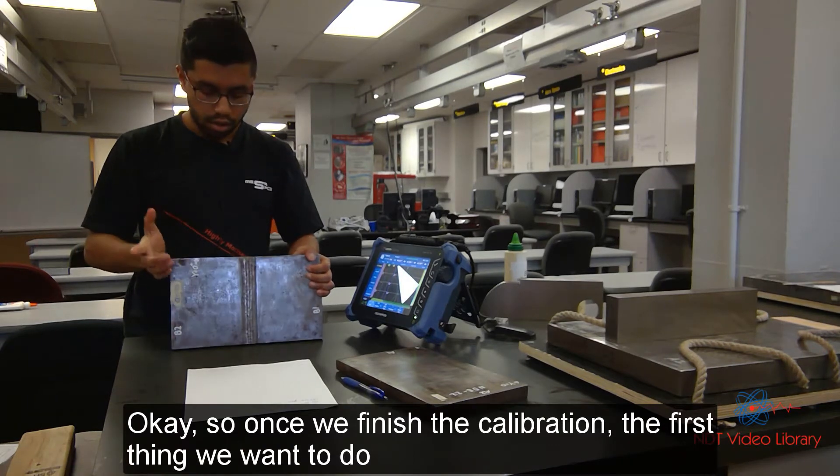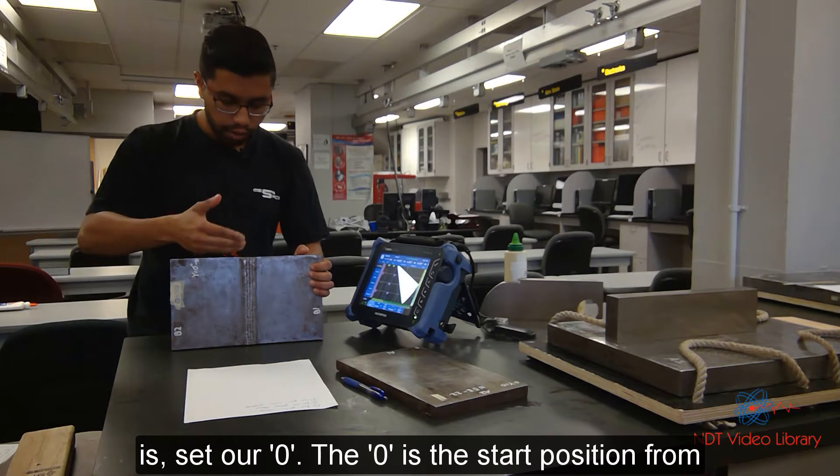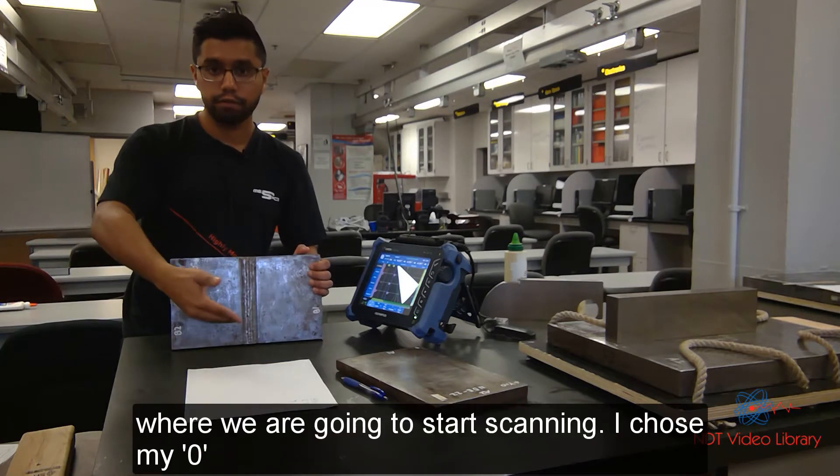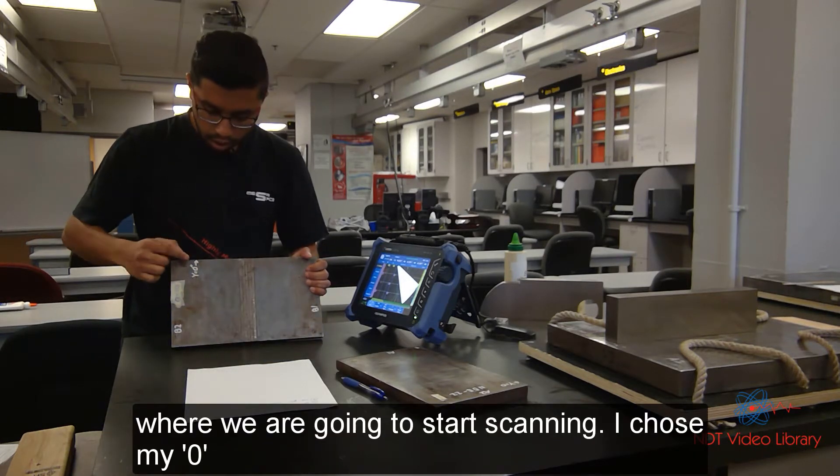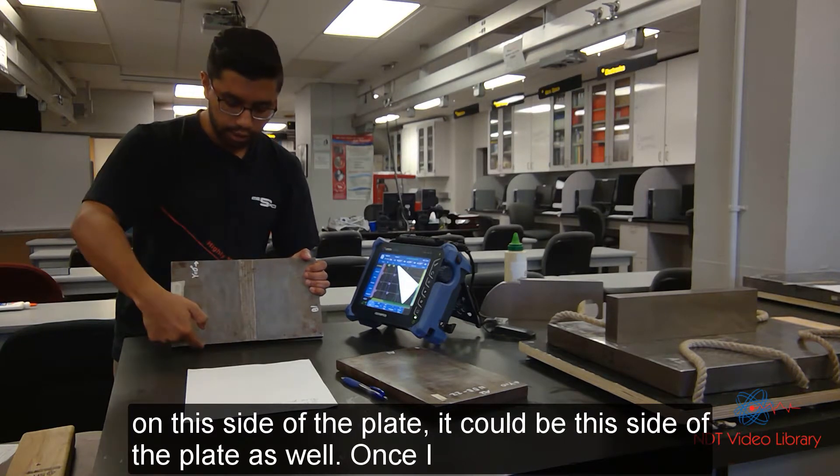Once we finish the calibration, the first thing we want to do is set our zero. The zero is the start position from where we're going to start scanning. I chose my zero on this side of the plate. It could be this side of the plate as well.